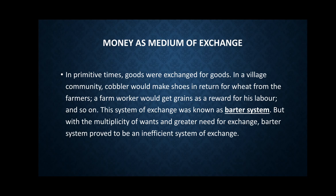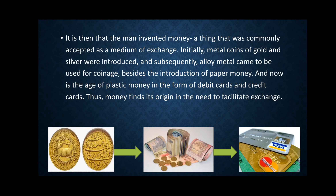But with the multiplicity of wants and greater need for exchange, the barter system proved to be an inefficient system. As the desires of people started increasing and they had a greater amount of wants, it became very difficult to exchange goods. That is why barter system proved to be inefficient after a certain point of time. It is then that men invented money — a thing that was commonly accepted as a medium of exchange. Initially metal coins of gold and silver were introduced, and subsequently alloy metal came to be used for coinage, besides the introduction of paper money. Now is the age of plastic money in the form of debit and credit cards. Thus money finds its origin in the need to facilitate exchange.